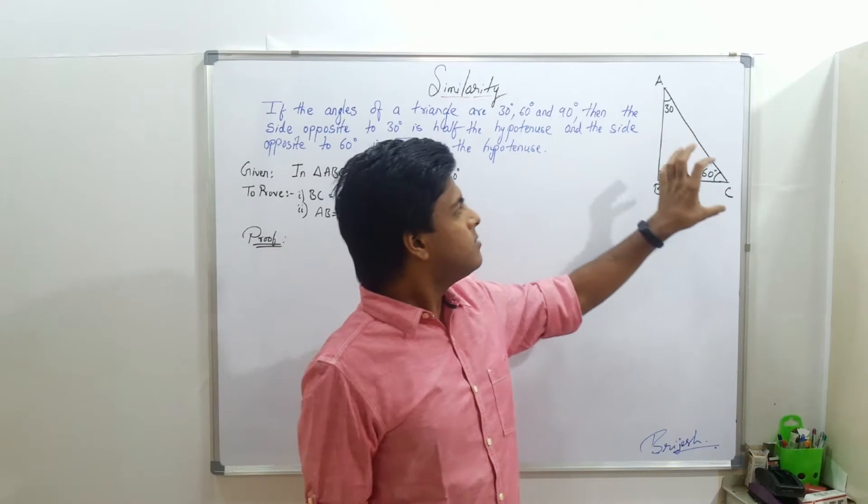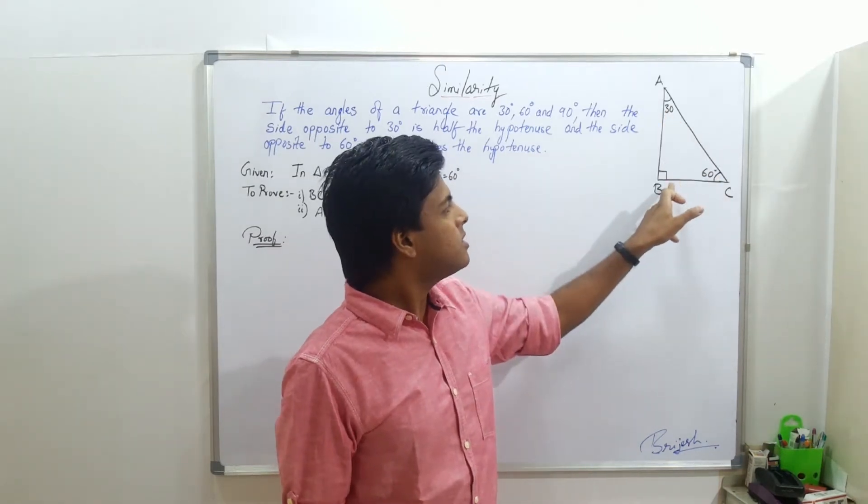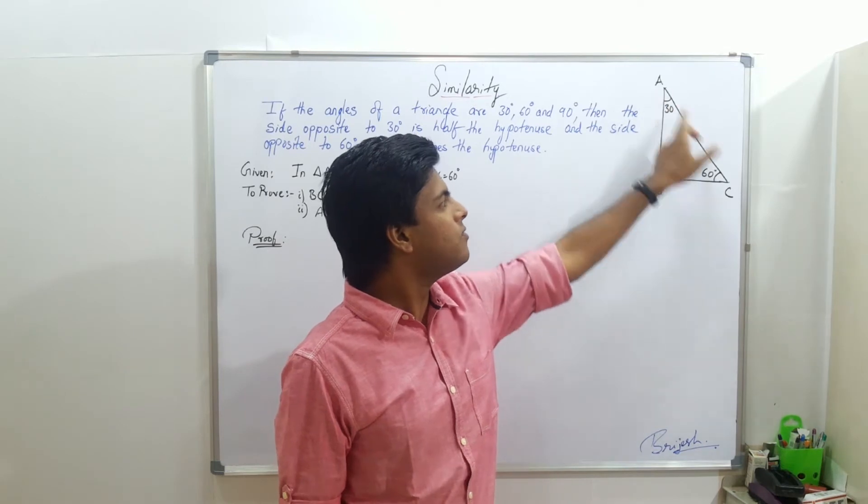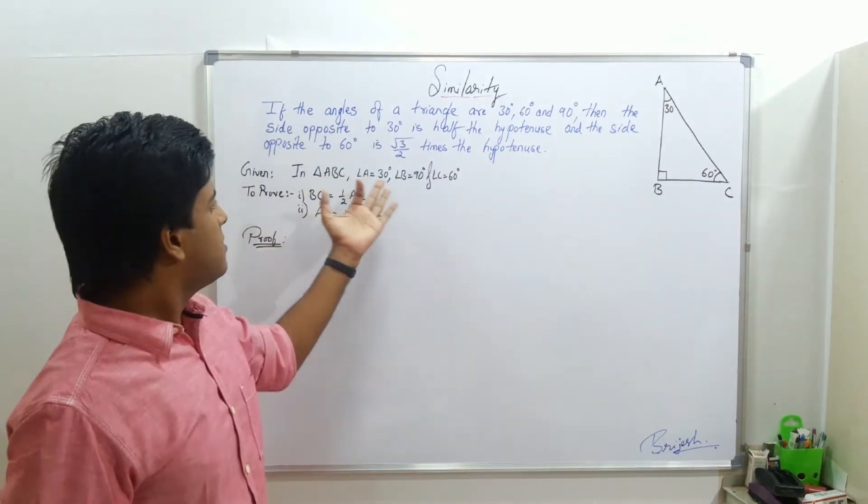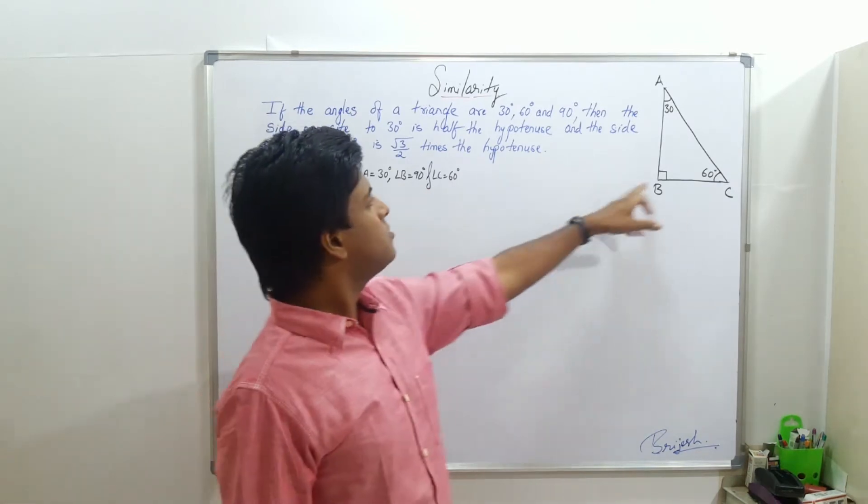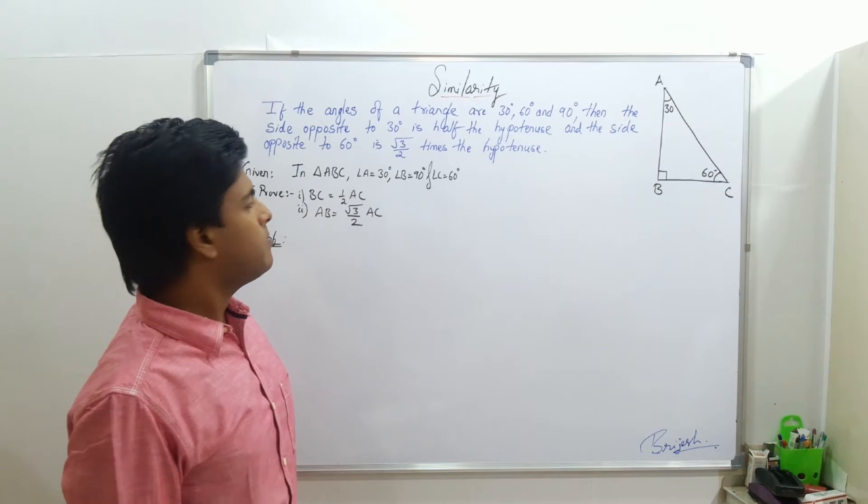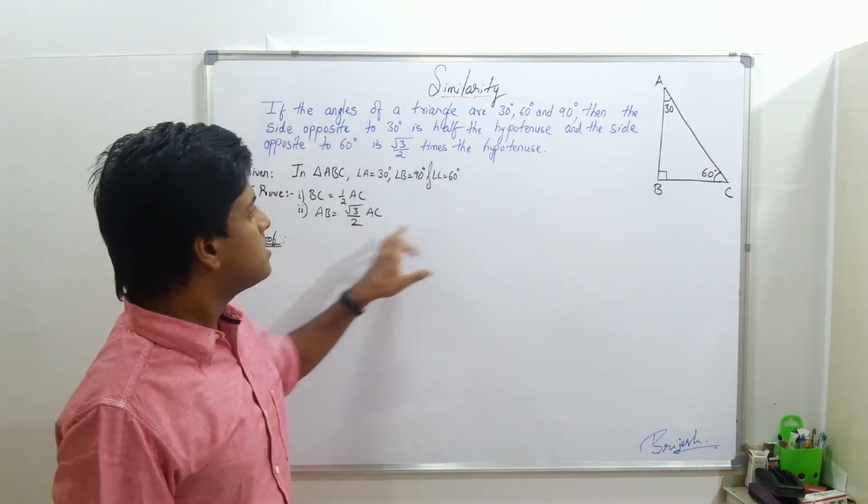As per the theorem, the side opposite to 30, that is BC, should be half of hypotenuse AC. I have written the given section, and what is to be proved - that BC should be half of hypotenuse, and AB should be root 3 by 2 times AC.